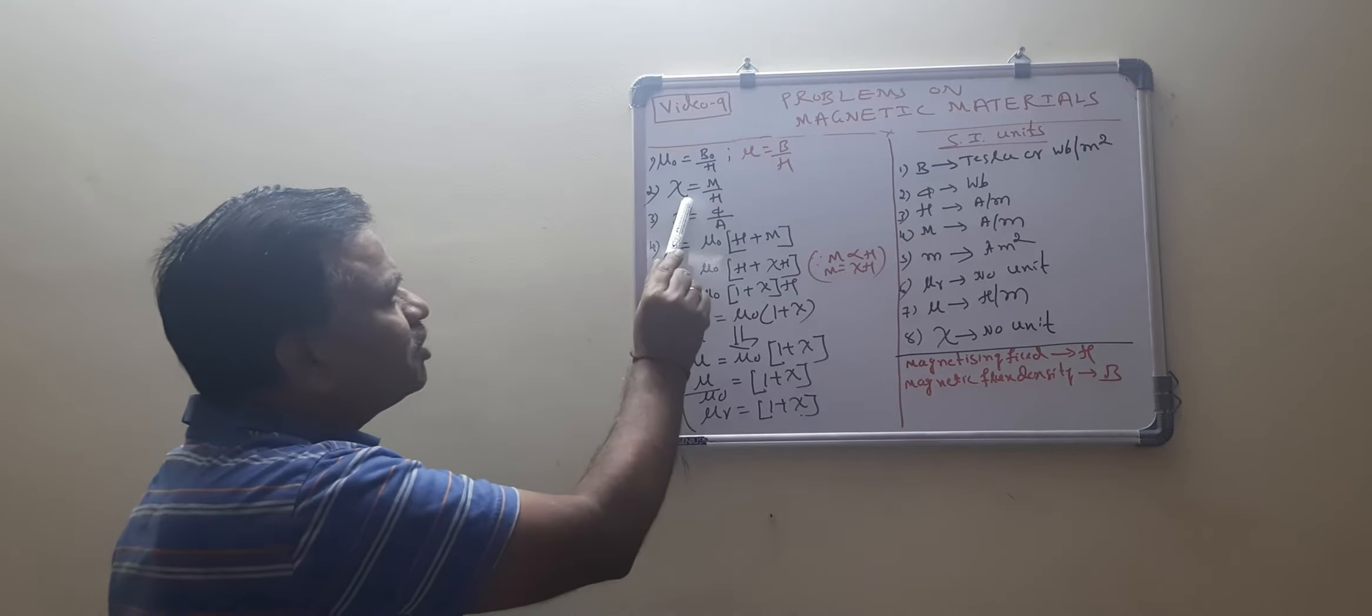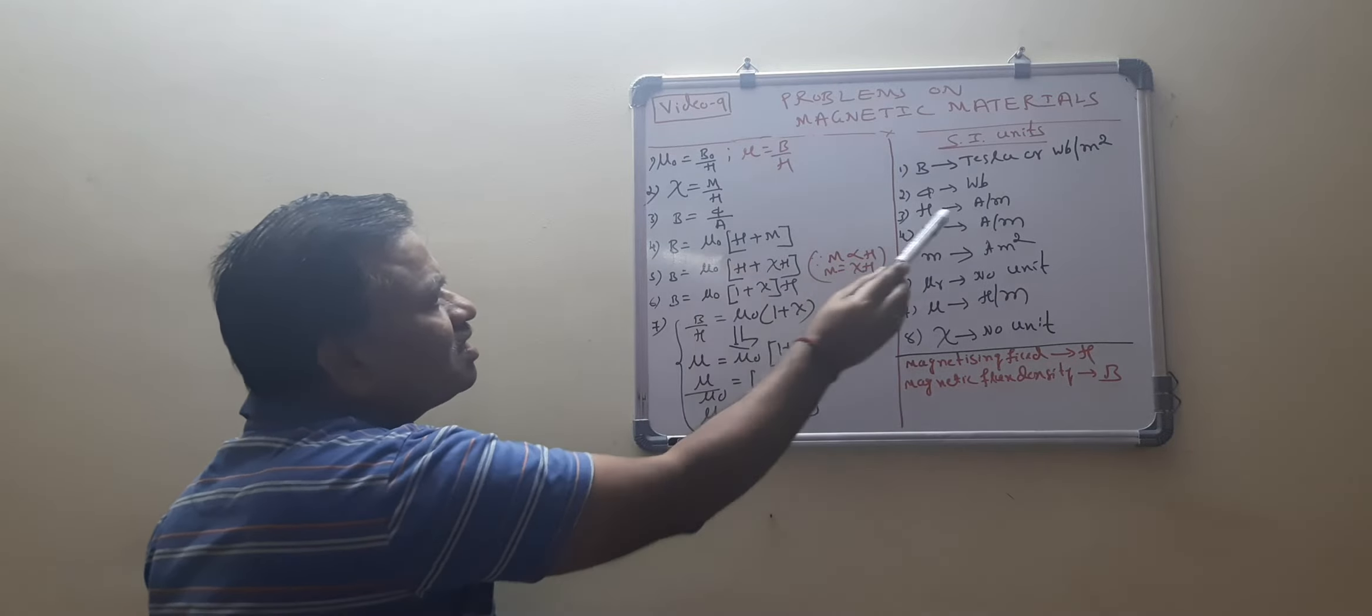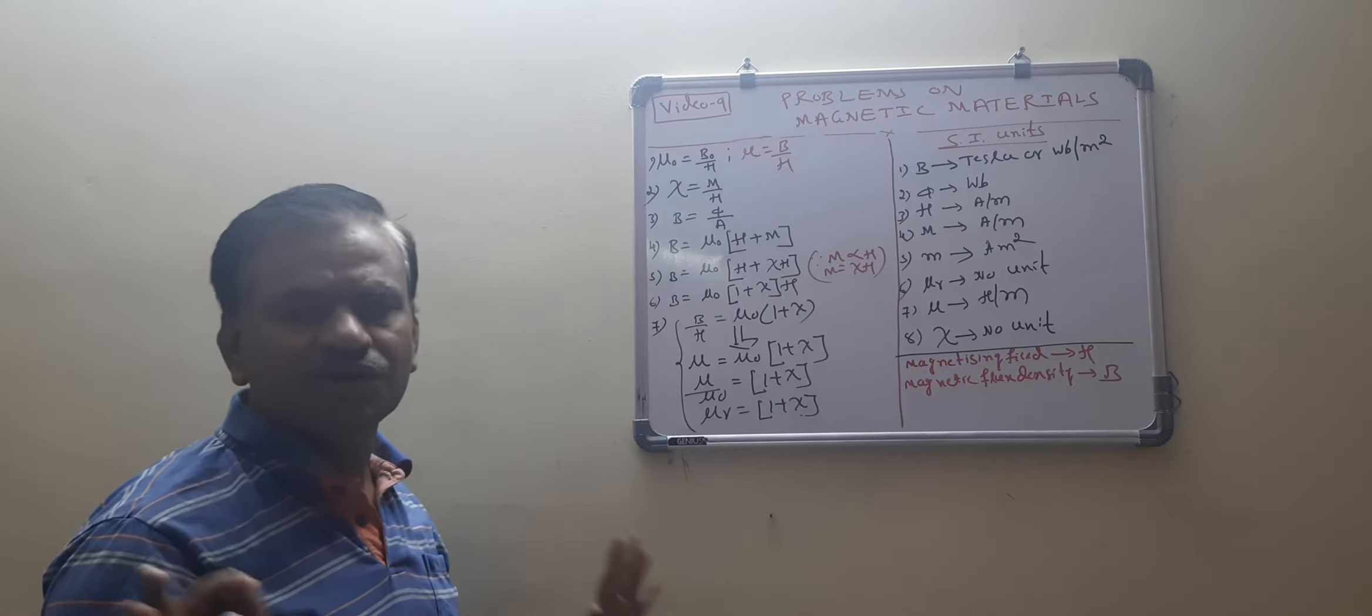Why it has no unit? I'll explain it. It is M by H. M is also ampere per meter, H is also ampere per meter. So that it has no unit.